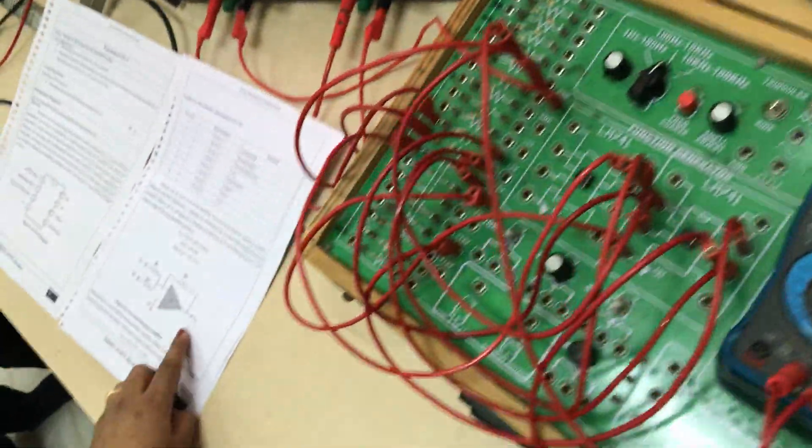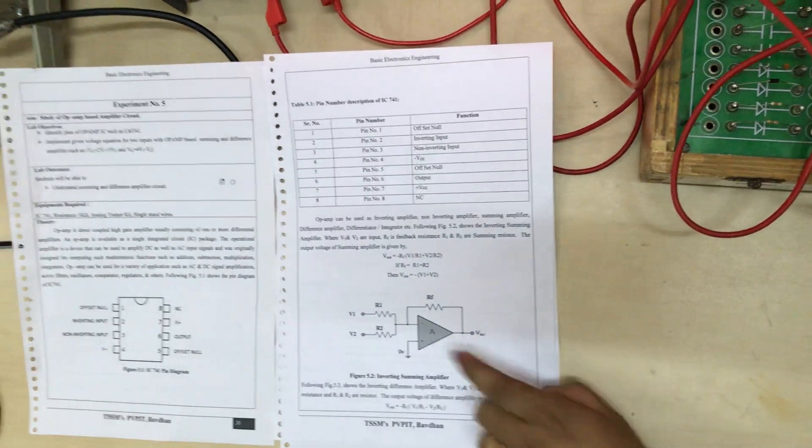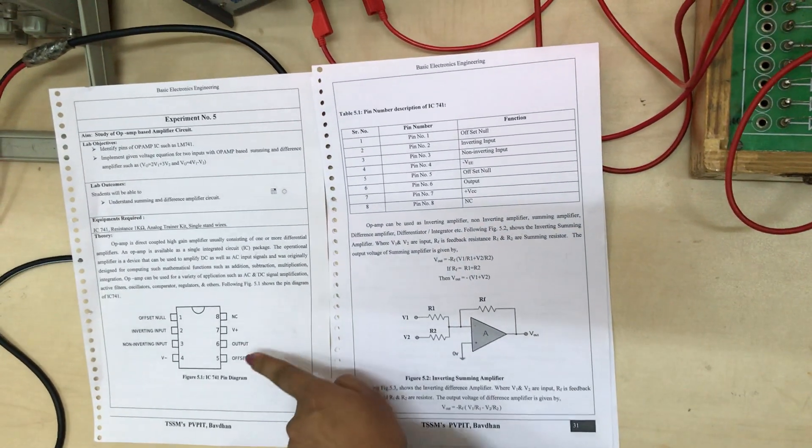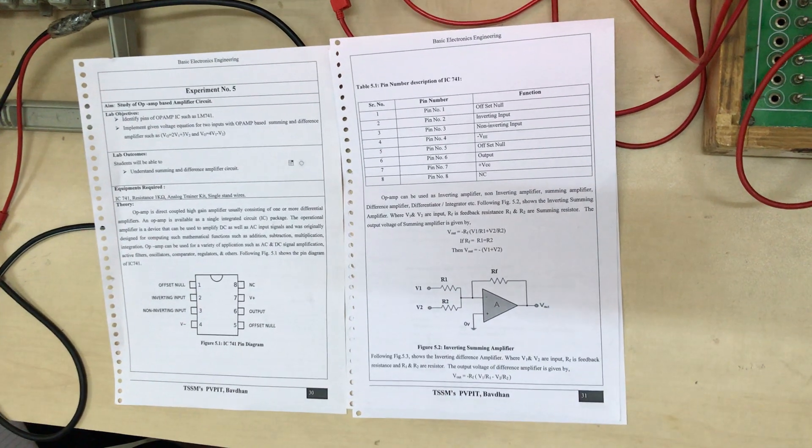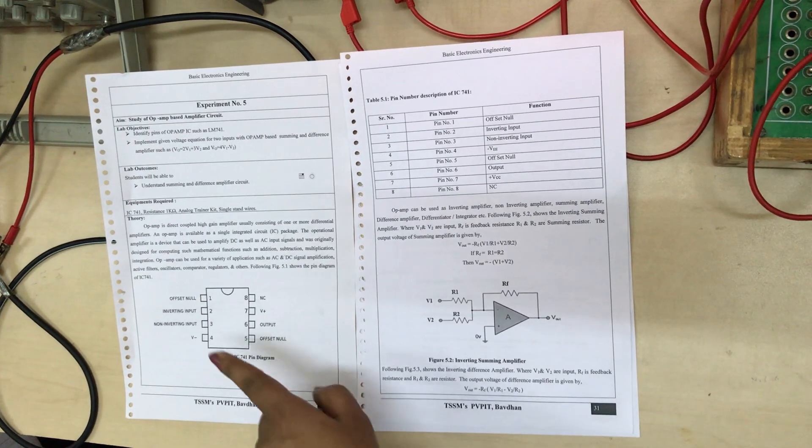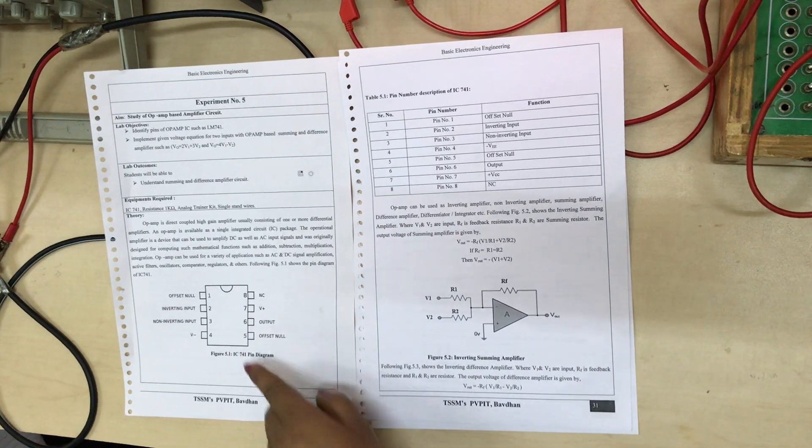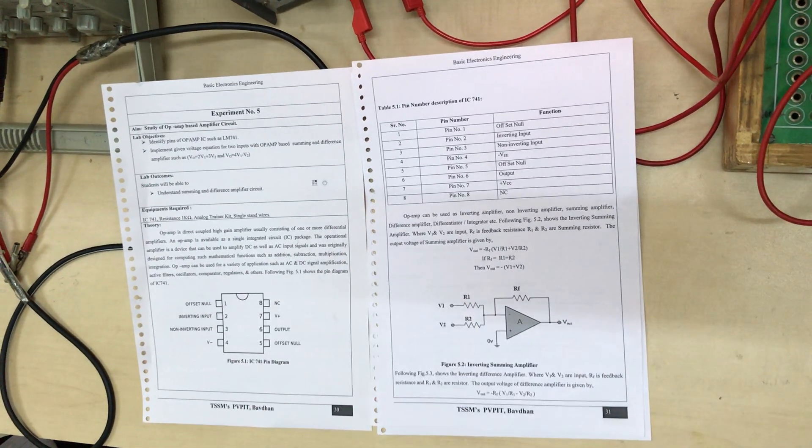We know the circuit diagram. In this we are using IC 741. This is the pin configuration of IC 741. Here totally 8 pins are there. In this 8 pins we are using only 5 pins: pin number 2 that is inverting input,